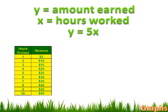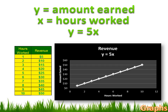I could also graph this table. I could list the hours worked, 1 through 10, as my X-axis, and the amount of revenue I earned, $5 to $50, as my Y-axis. For each value of X, like 1, I'd go up to the line and then over to the Y-axis to find out how much money I earned. For 1 hour, I earned $5. For 6 hours, I earned $30.